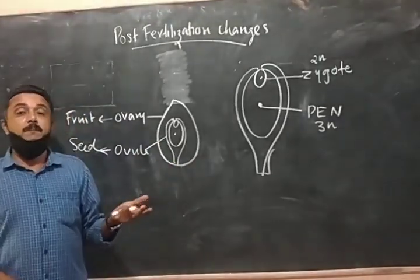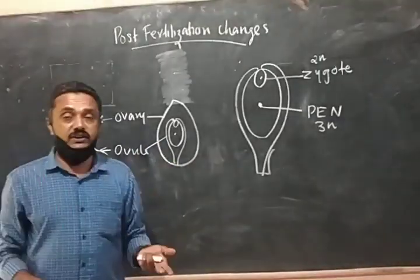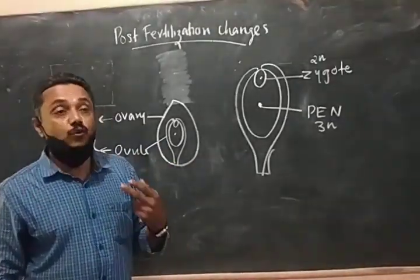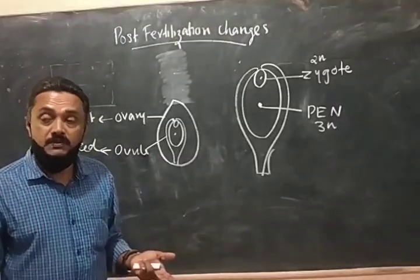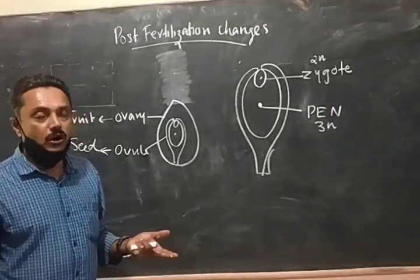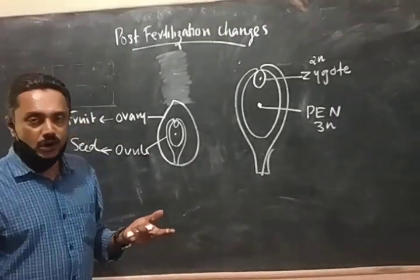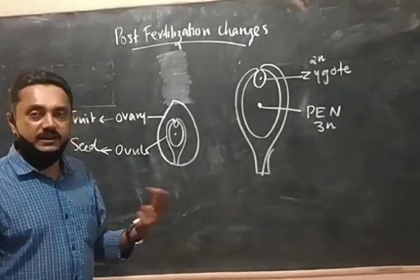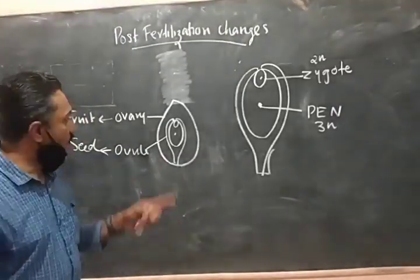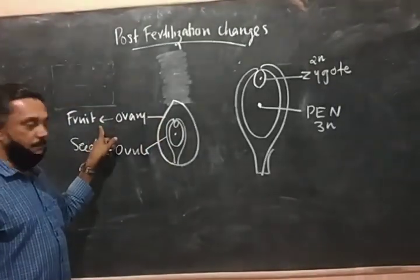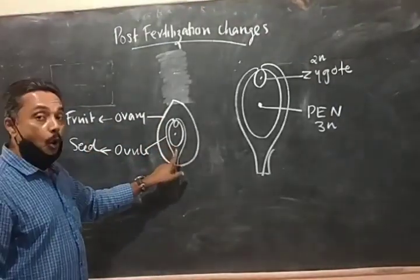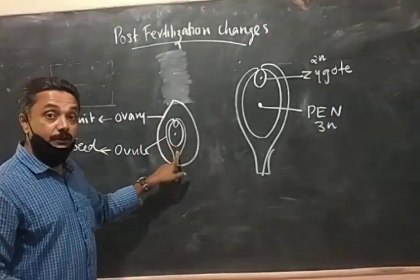Usually fruits develop after fertilization. The fruits which develop without fertilization are called parthenocarpic fruits, as we have seen in the first year. So the ovary develops into fruit and the ovule develops into seed.